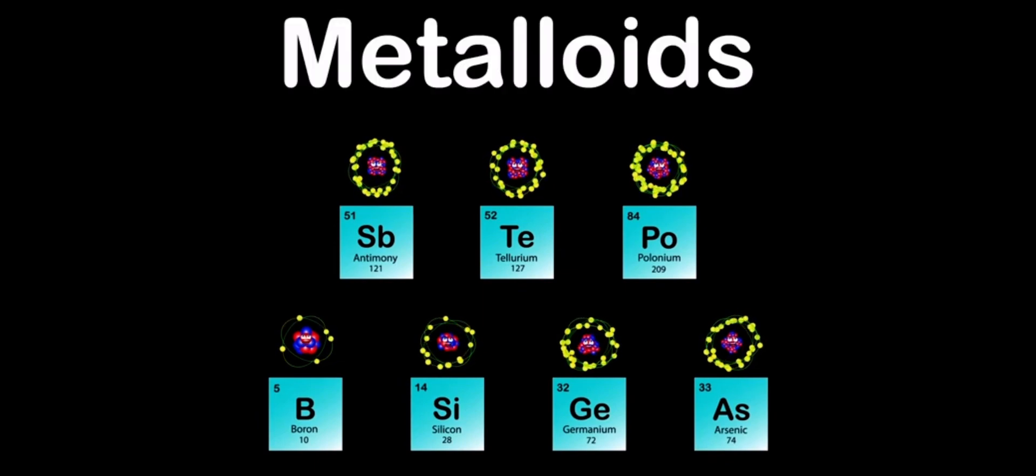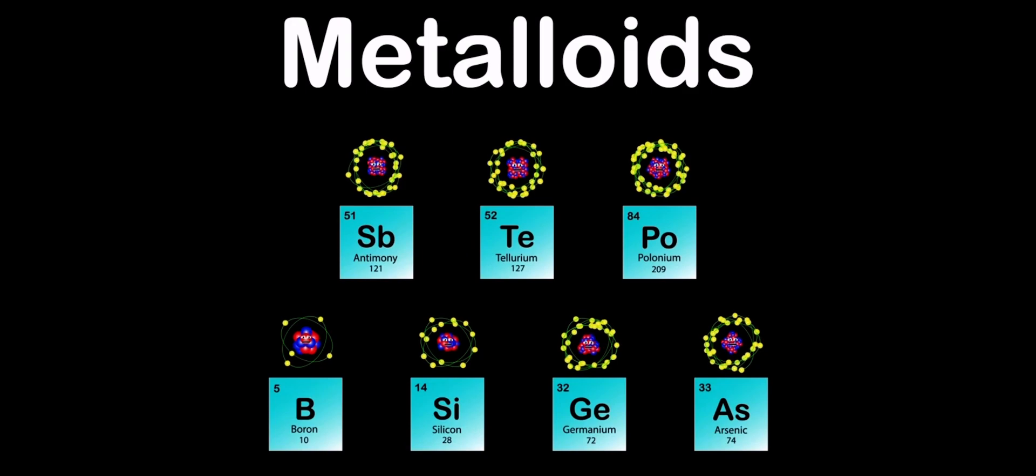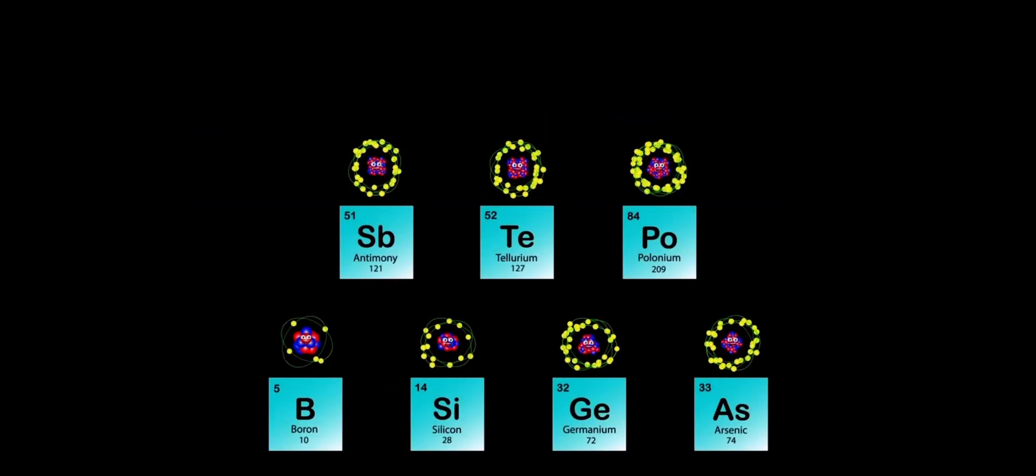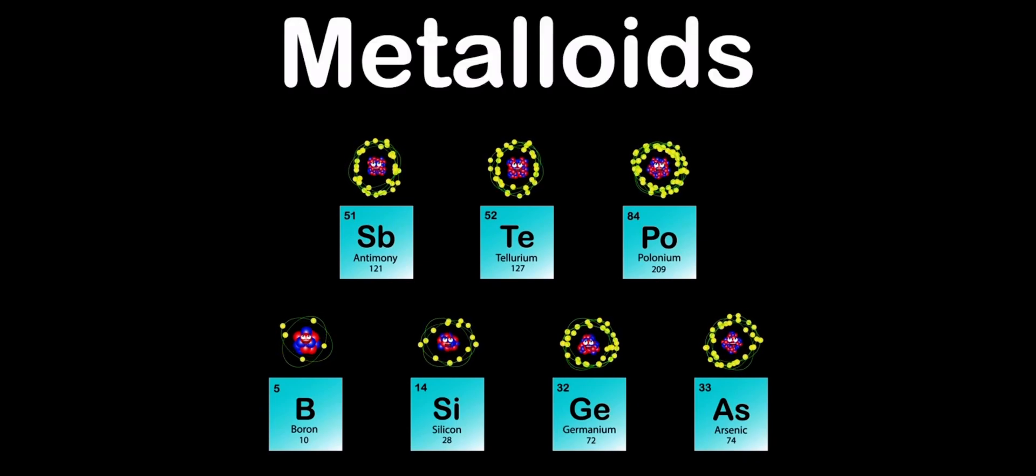We are the Metalloids of the Periodic Table. Groups 13 through 16 and periods 2 through 6 is where you'll find us in the Periodic Table Mix. We are the Metalloids of the Periodic Table.